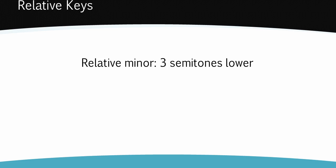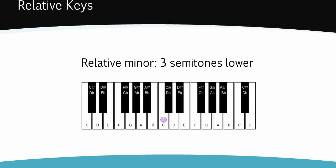For example, to find the minor key that has the same key signature as C major, count down three semitones from C. You'll arrive at A. So both C major and A minor share the same key signature.